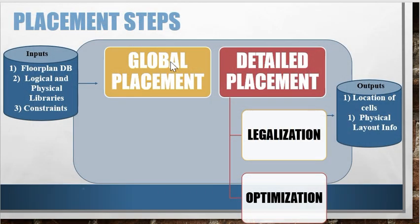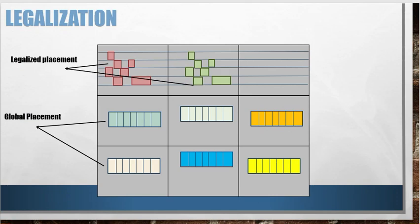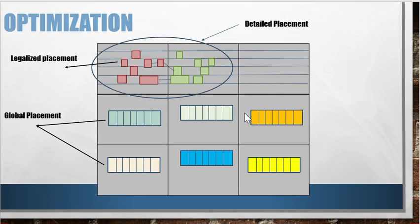So after global placement, we move on to the next step, which is detailed placement. Detailed placement is divided into two steps: one is legalization and the other one is optimization. So we will look at legalization first. During legalization, the legalization of global placement is done. In this step, the tool fixes the overlaps which were created during global placement. As you can see here, in the global placement, all the cells were overlapped like this. But during legalization, the cells have been placed to their appropriate location without any overlaps.